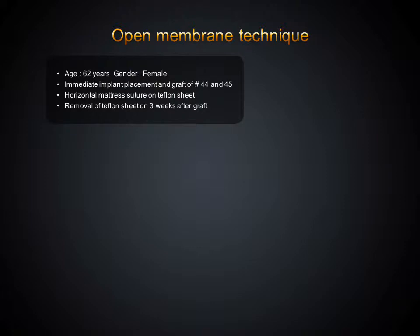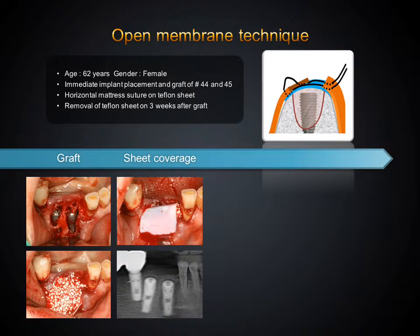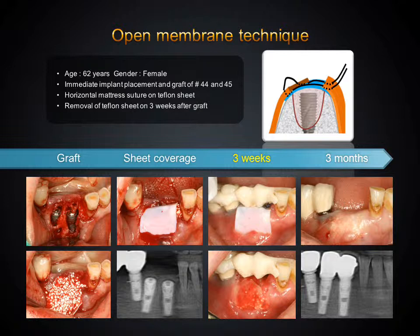To evaluate the effect of RHBMP2 on keratinized gingiva regeneration in extraction sockets, HA-TCP particles saturated with RHBMP2 were filled in extraction sockets of mandibular premolars with immediately placed implants, and teflon sheets were covered to prevent wound shrinkage and bone particle escape. At three weeks after the open membrane technique, the teflon sheet was removed, and immature keratinized gingiva was generated on the open wound. At three months, the keratinized gingiva was matured. As a result, the open membrane technique with RHBMP2-saturated HA-TCP particles promotes keratinized gingiva regeneration in socket preservation.